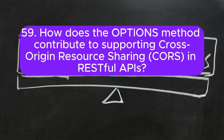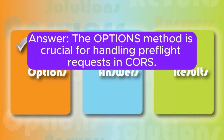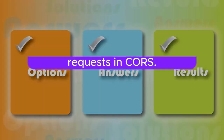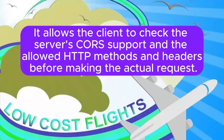Question 59: How does the OPTIONS method contribute to supporting CORS in RESTful APIs? The OPTIONS method is crucial for handling pre-flight requests in CORS. It allows the client to check the server's CORS support and the allowed HTTP methods and headers before making the actual request.